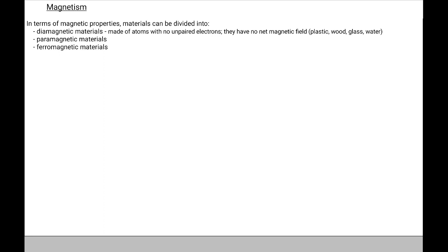Diamagnetic materials are made of atoms that don't have unpaired electrons, so they do not have a net magnetic field. Examples include plastics, wood, glass, and water. They are actually a little bit anti-magnetic — they get slightly repelled by magnets.